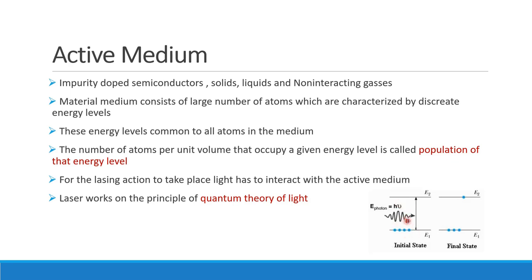If you have one photon entering the active medium, one atom in the excited state can absorb it. If you have three photons, three atoms can absorb them and transition to the excited state.